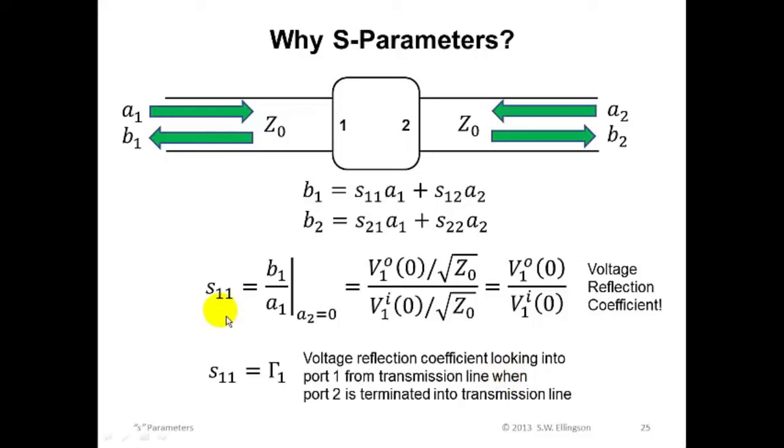Reviewing the defining equations from a few slides back and applying what we already know, we see that S11 is B1 over A1 when A2 is zero. And that turns out to be the ratio of the outbound voltage at port 1 to the inbound voltage at port 1. And you know this already. This is the voltage reflection coefficient, which is a useful and well-known, hopefully to you already, quantity.